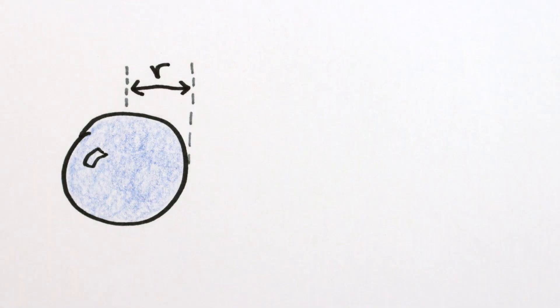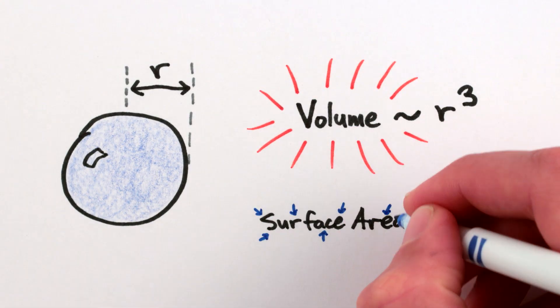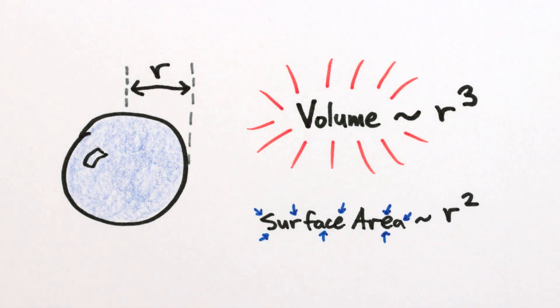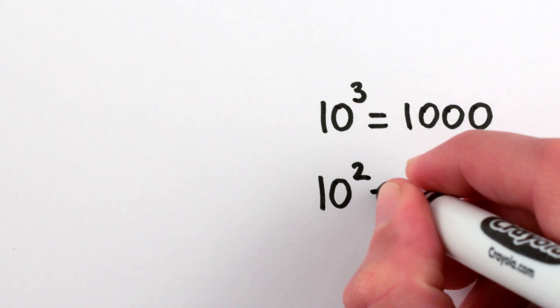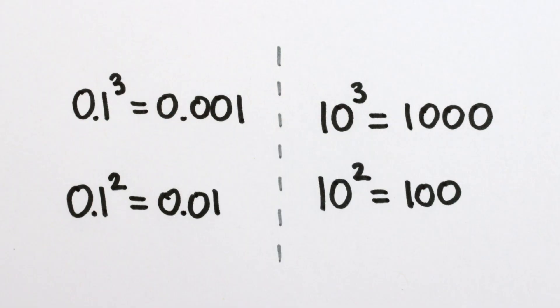For large amounts of water, the energy you get from the volume, which is proportional to the radius cubed, is more than enough to make up for the energy cost due to the surface area, which is proportional to the radius squared. Cubing tends to make things bigger than squaring. But for really small radii, the opposite is true. Cubing a small number makes it smaller than squaring it.